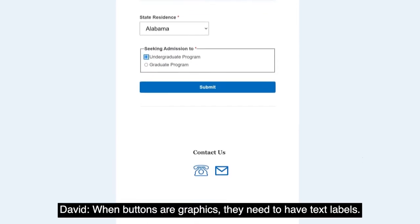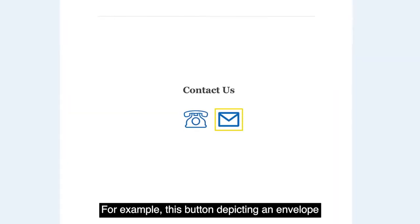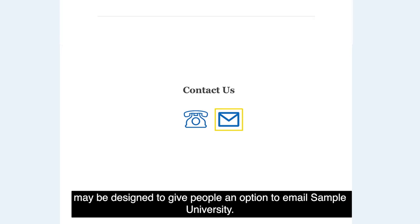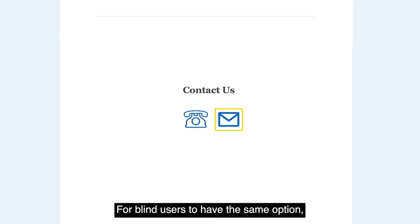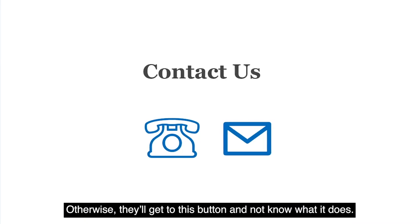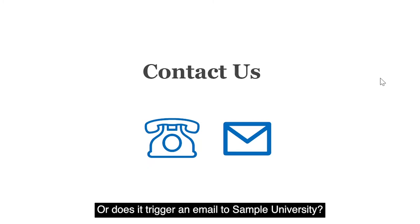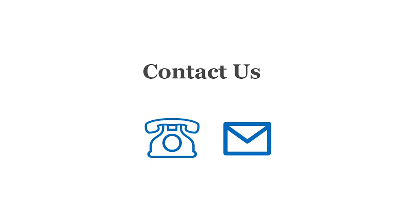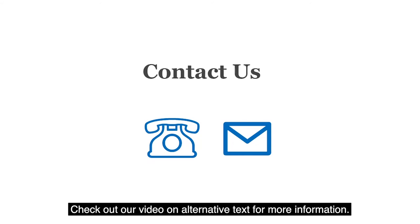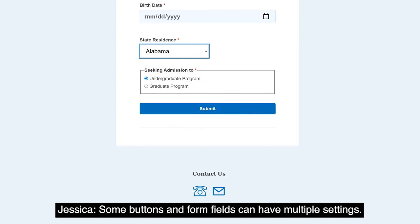When buttons are graphics, they need to have text labels. For example, this button depicting an envelope may be designed to give people an option to email Sample University. For blind users to have the same option, the button should have a label that says something like 'Email us,' otherwise they'll get to this button and not know what it does — does it submit a form, does it open a new page, or does it trigger an email to Sample University? Check out our video on alternative text for more information.